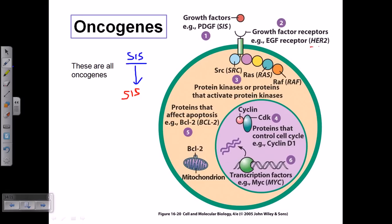The third type includes proteins like RAS, SRC, and RAF — these are typical tyrosine kinase family proteins. Tyrosine kinases phosphorylate proteins that have tyrosine residues. RAS, SRC, and RAF phosphorylate and activate further downstream processing of the signal transduction pathway. We have discussed the RAS and RAF signaling pathway before, so go back and review that.